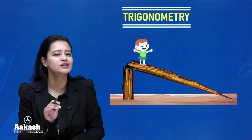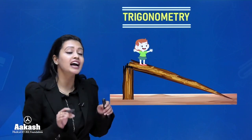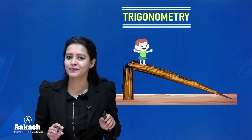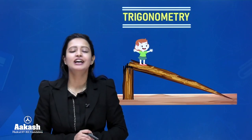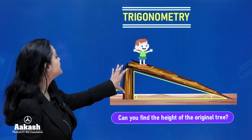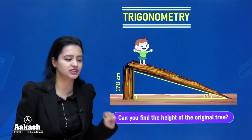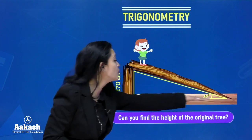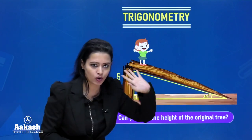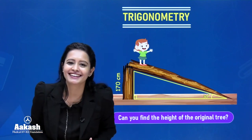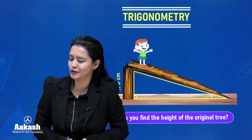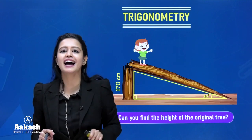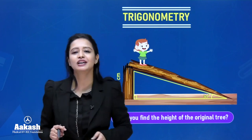Let us look at a small scenario. Here we have a little girl playing on a broken tree. Can you figure out the original height of this tree? We need some additional information. Let's suppose the broken part of the tree measures 170 cm and this broken part is making an angle of 30 degrees with the ground. Can you figure out the height of the original tree? We will solve this question in today's session after discussing the concepts needed.